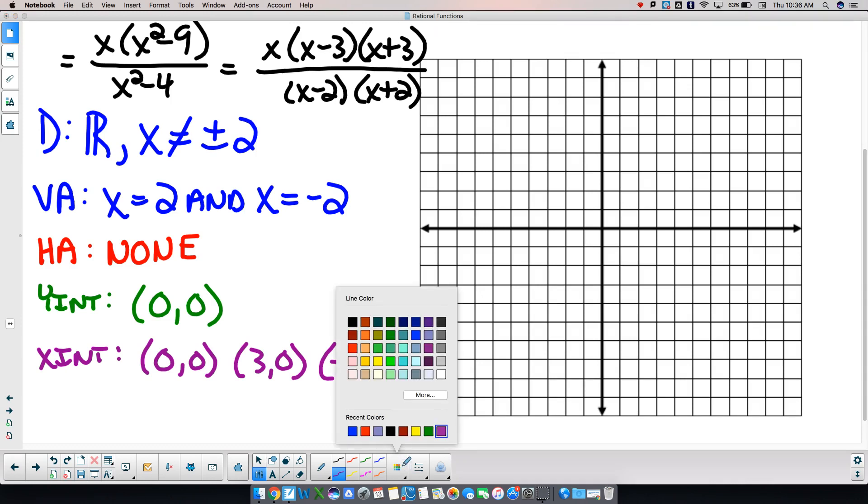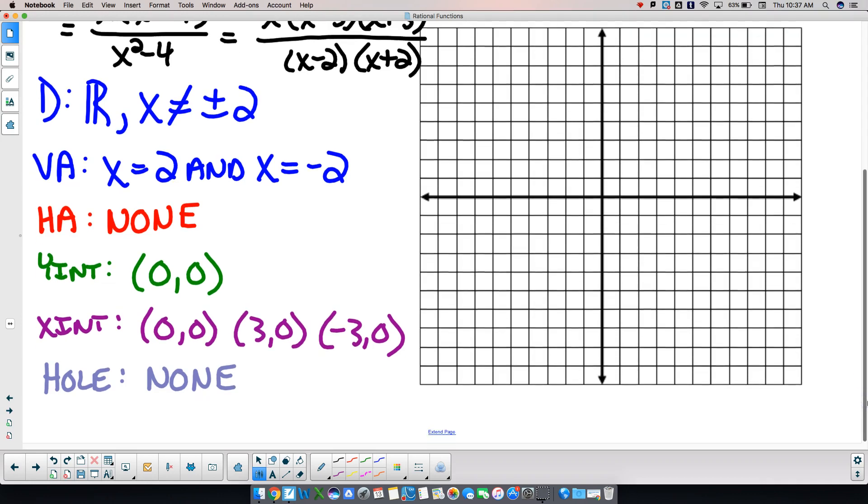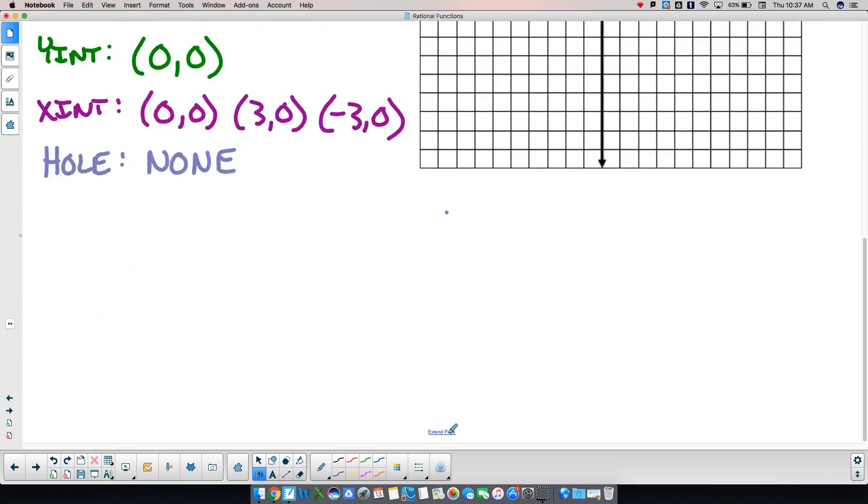Holes are next. Do we have a hole? No hole because nothing canceled out. So then that leaves us with our new friend, the slant asymptotes.